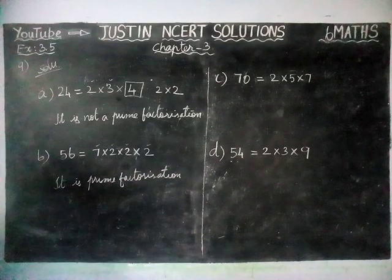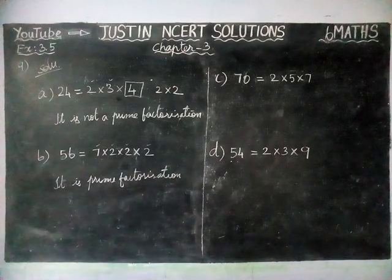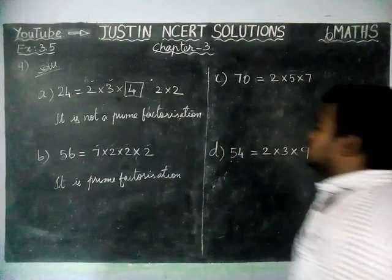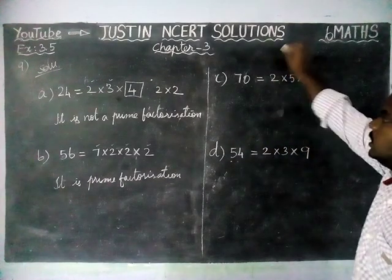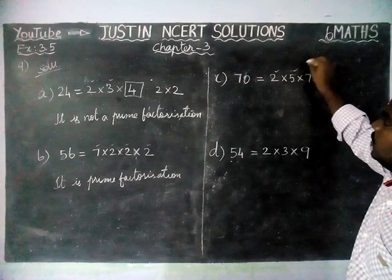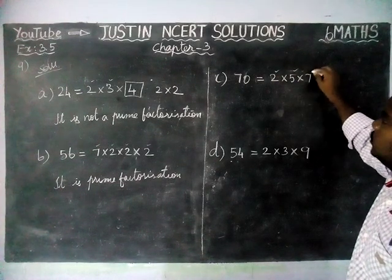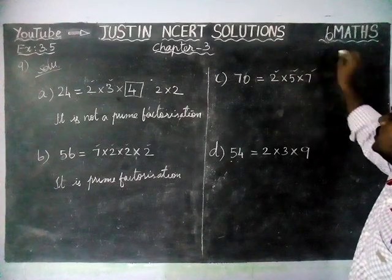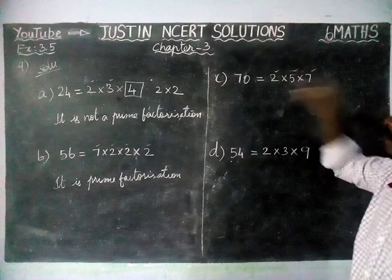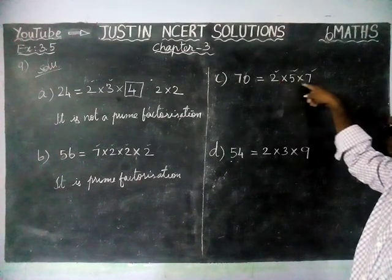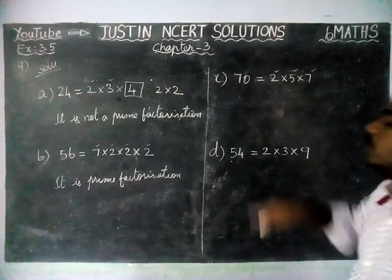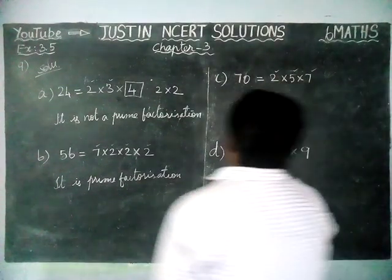Next, we are going to check Option C. Here, 2 is a prime number, 5 is also a prime number, 7 is also a prime number. Therefore, the factors of 70 are all prime numbers, so it is prime factorization.